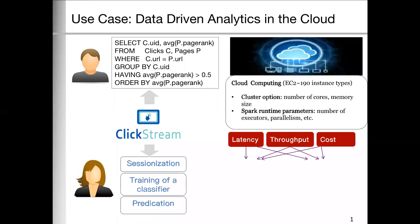For each task, there will be some important performance objectives, such as latency, throughput, and cost. These objectives depend on the cluster option and the Spark runtime parameter. Together, we call them as configuration.